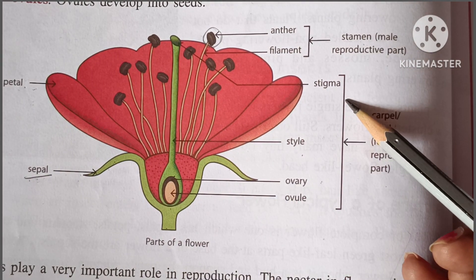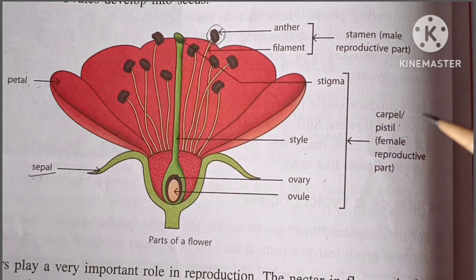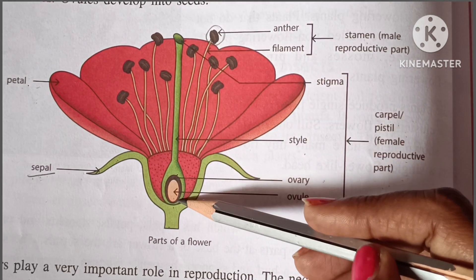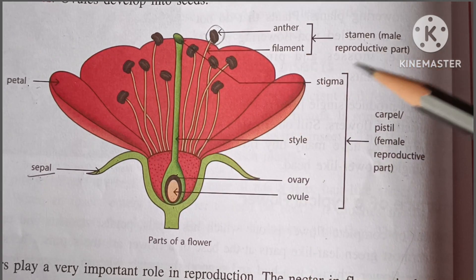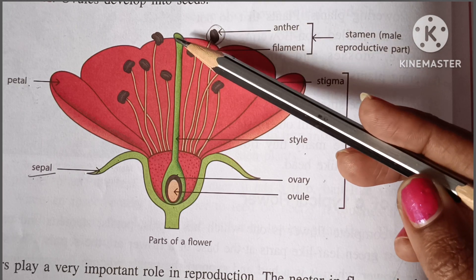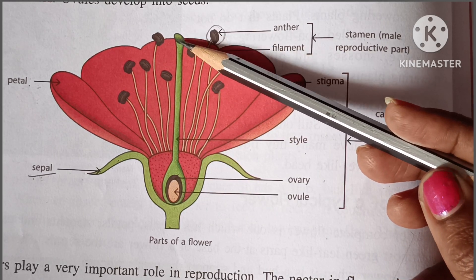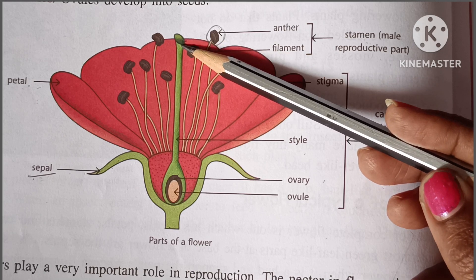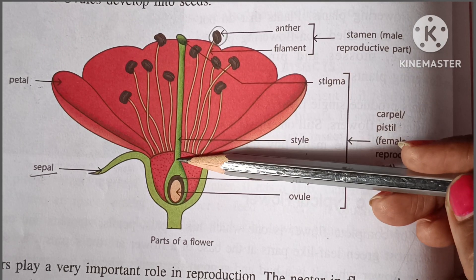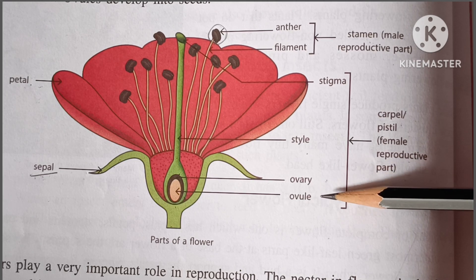The next one is the carpel, or the pistil, the female part of the plant. It is also called the female reproductive part of the plant. This is the portion from top to bottom of the female reproductive part. This carpel is divided into three main parts: first one is the stigma, then the style, and the ovary. The stigma secretes a sticky fluid. In the middle, the style is present — a cylindrical pipe-like structure. At the bottom of the flower, the ovary is present.